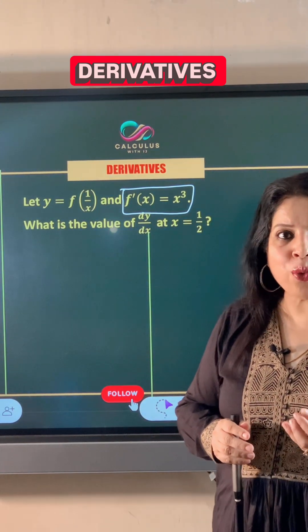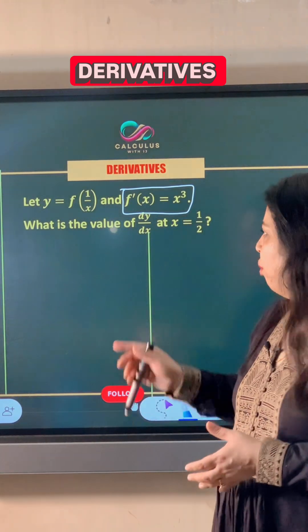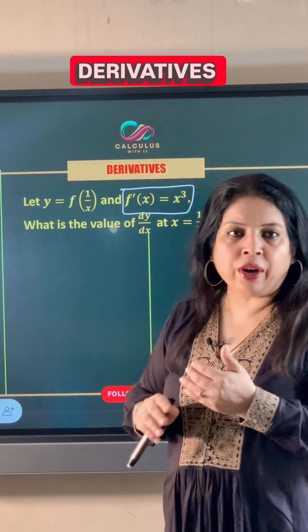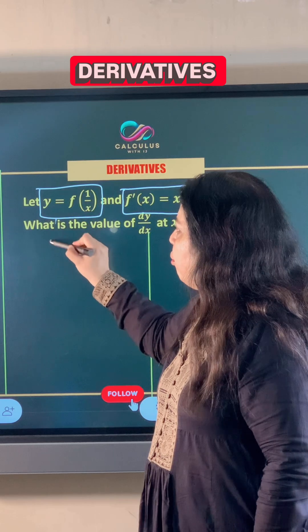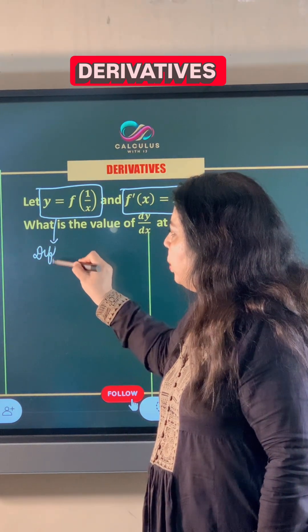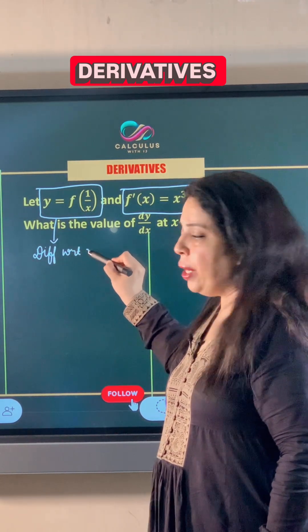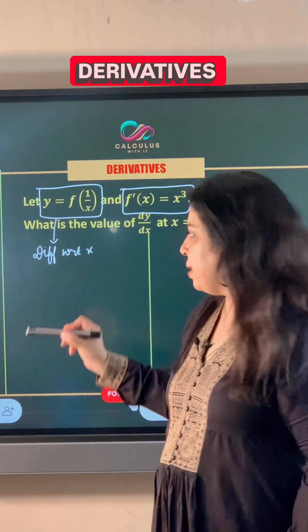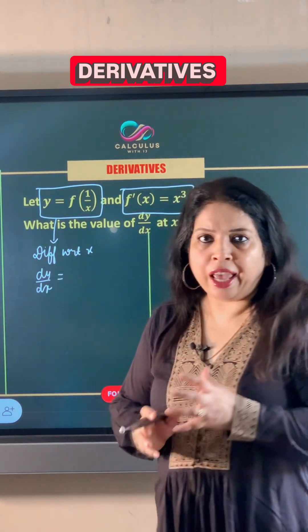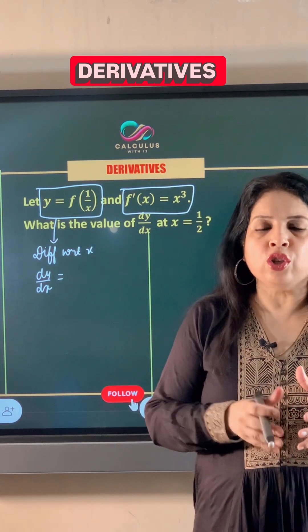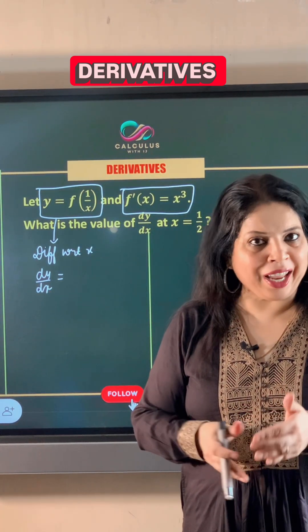Let's start by finding the value of first order derivative of y with respect to x. We'll take this expression and differentiate both sides with respect to x. The derivative of y with respect to x is dy by dx and the derivative of f x is denoted by f dash x.